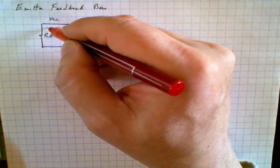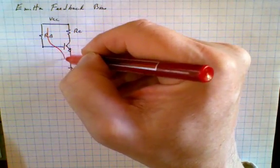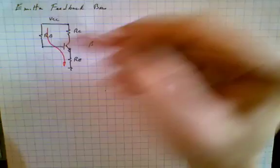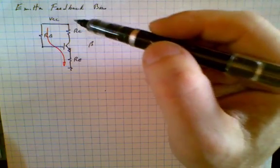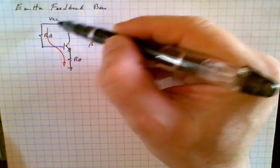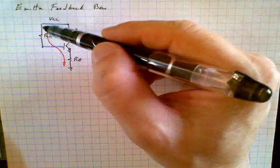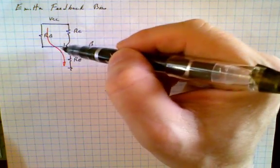So to analyze this circuit again, we're going to look at that path through the base and we're going to write Kirchhoff's voltage law. Again, Kirchhoff's voltage law simply says that the total voltage across the circuit, Vcc, is equal to the sum of the individual voltage drops.